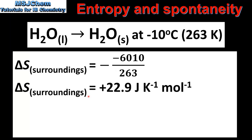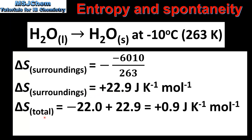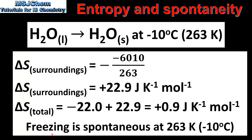Using the equation ΔS_surroundings = −ΔH_system / T, this gives a change in entropy of the surroundings of +22.9 J/K·mol. Adding the entropy change of the system and surroundings gives a total entropy change of +0.9 J/K·mol. This positive value tells us that the freezing of water is spontaneous at 263 K.